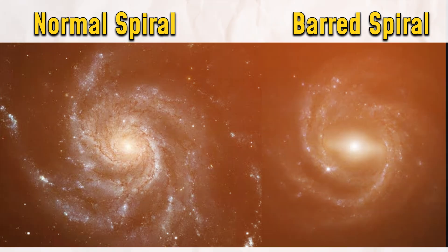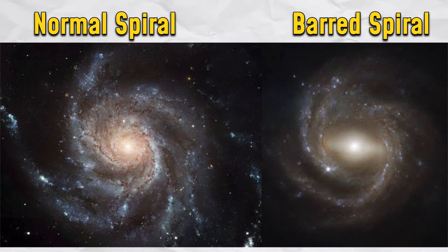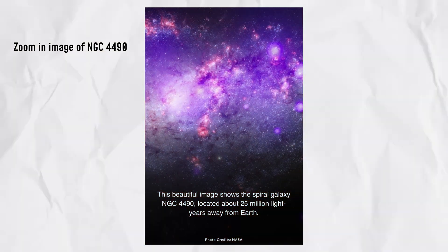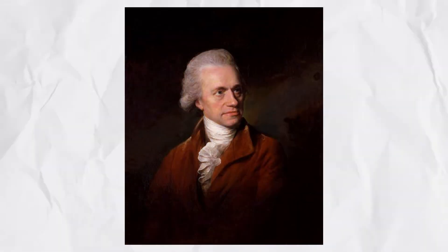Spiral Galaxy NGC 4490. A barred spiral galaxy with spiral arms extending from the core. The NGC 4490 barred spiral galaxy is 25 million light-years away. Discovered in 1788 by scientist William Herschel.